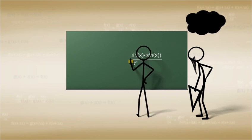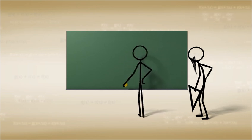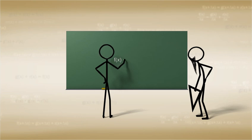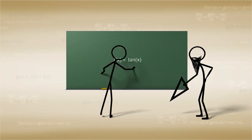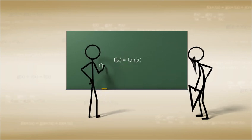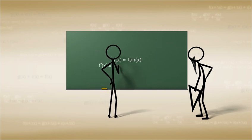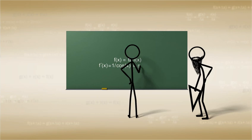With this knowledge in hand, we can simply say that if f of x is equal to tangent of x, then the derivative of f of x is equal to 1 over the cosine of x squared. That is to say, the secant of x squared.